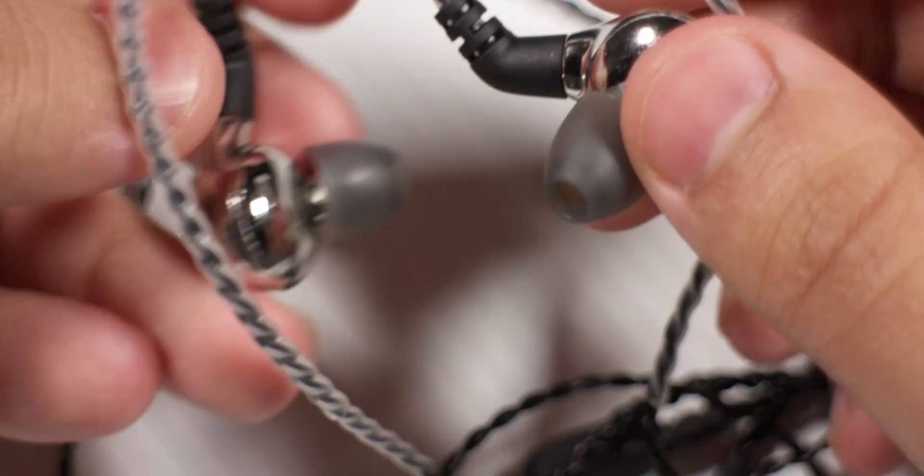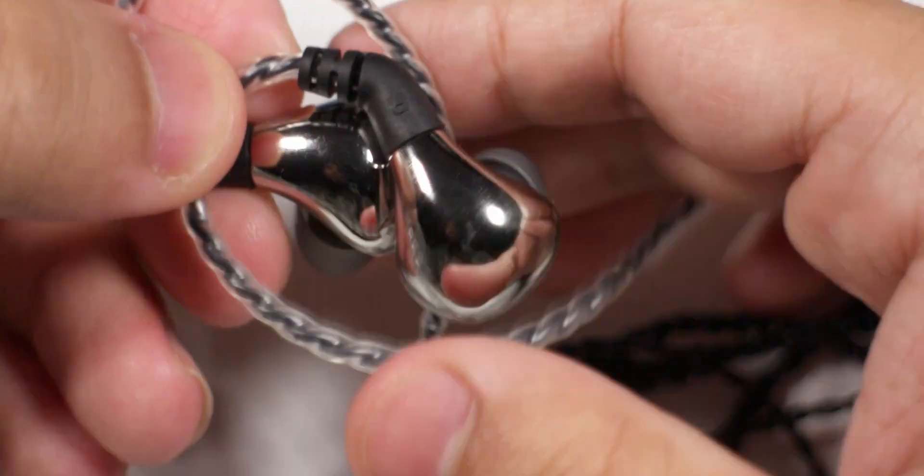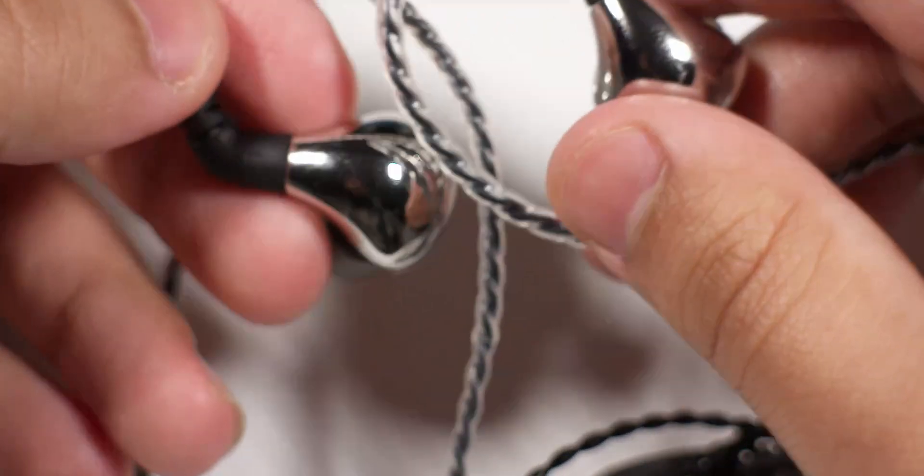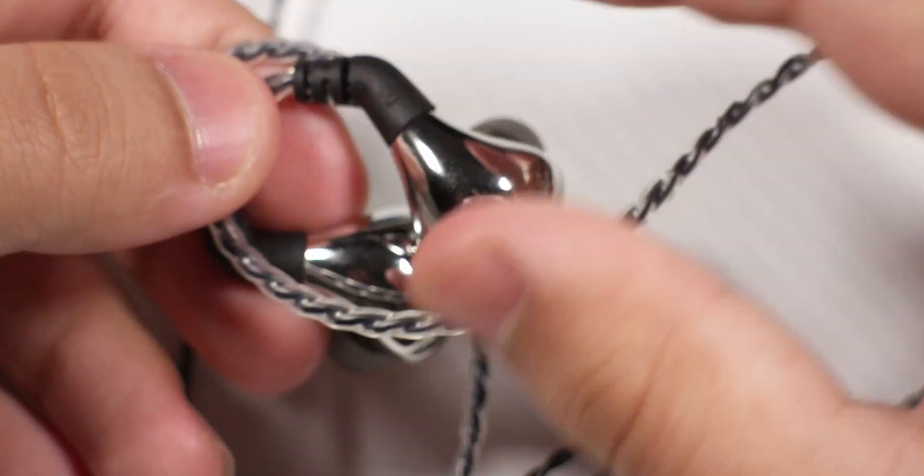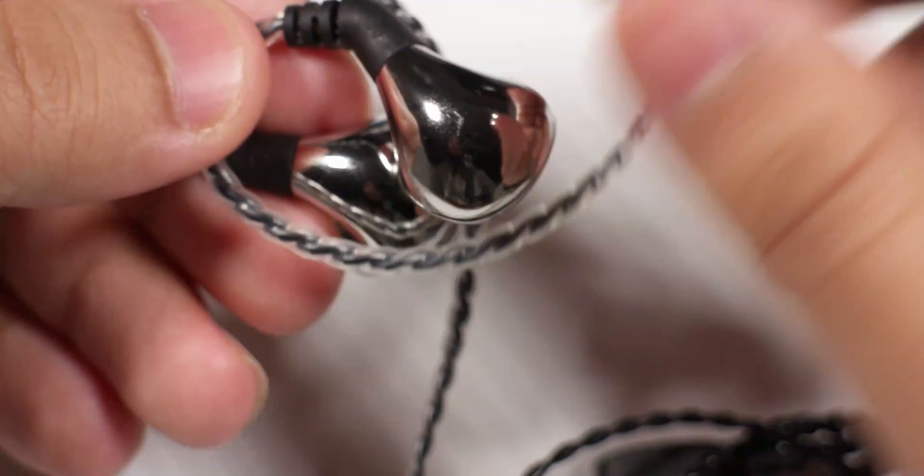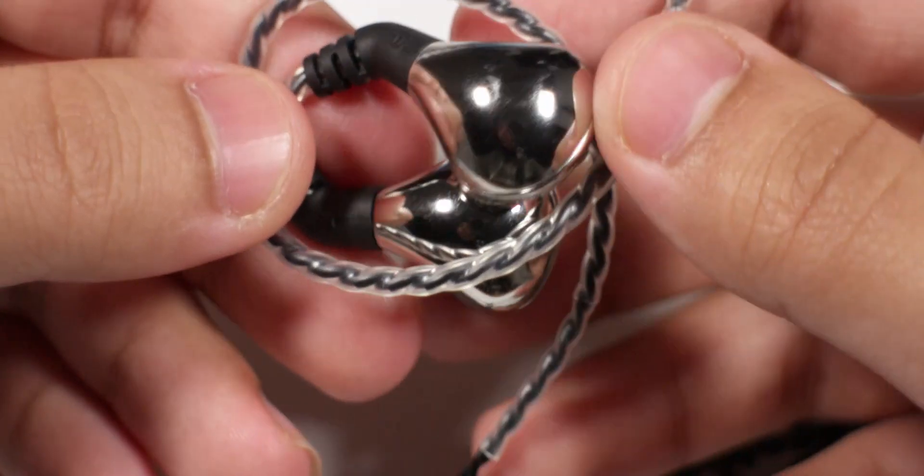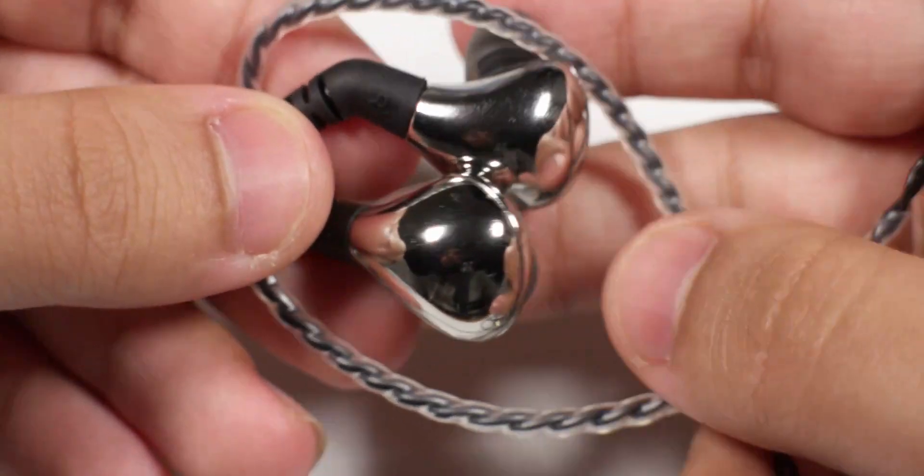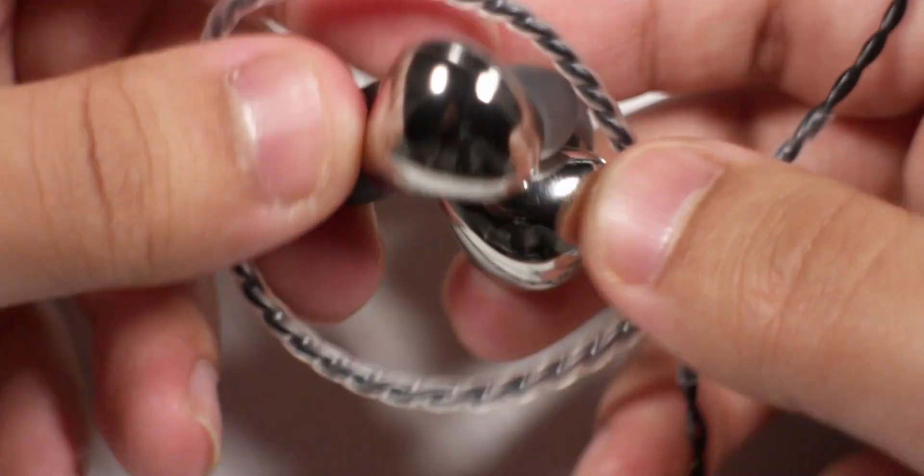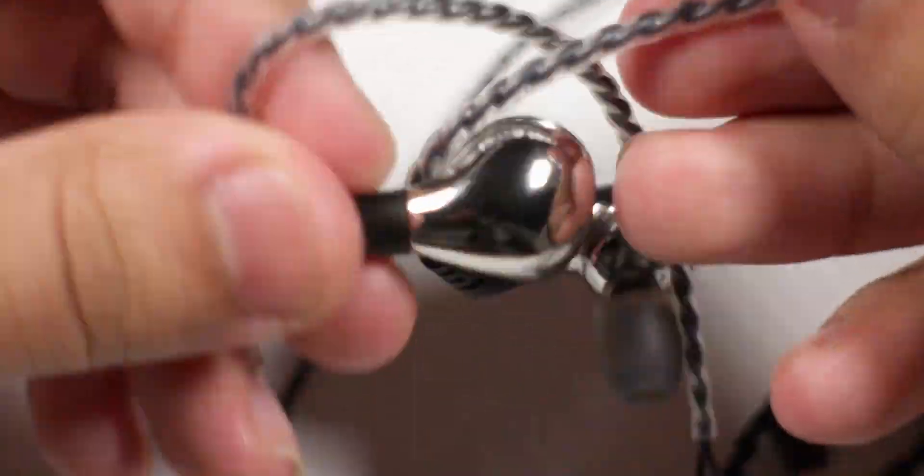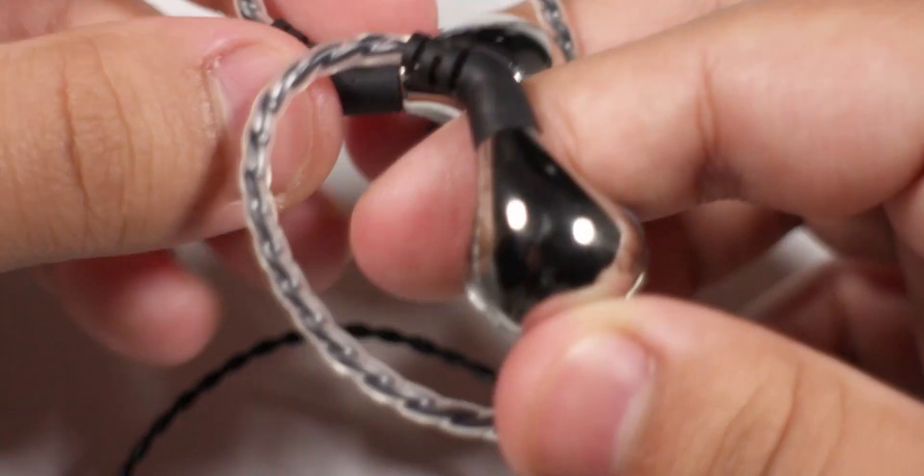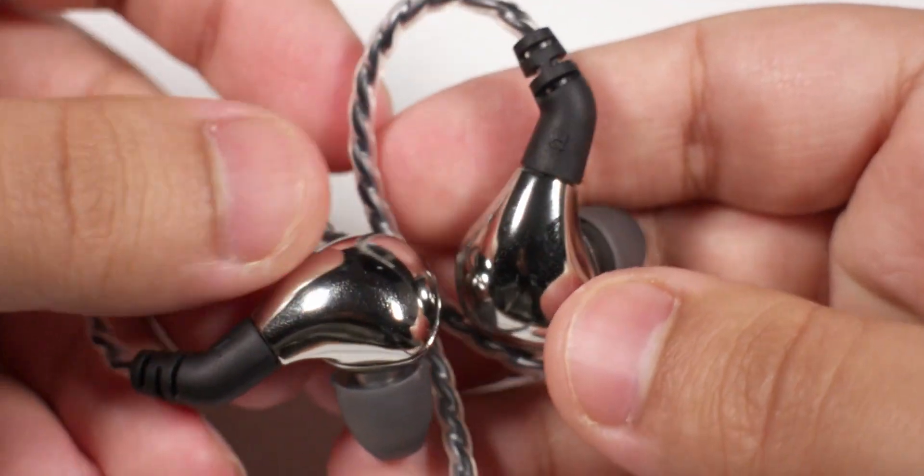I actually like the sound more than the Fiio FH5s because these sound really natural. They have a really balanced sound, so mids and bass are pretty neutral or natural sounding. There is, however, just a tiny, ever so slight boost in the bass. These are single dynamic drivers. The hiss is lower than the Fiio FH5s as well on the Hugo 2 and the Mojo. It didn't really bother me. Sound quality-wise, I can't say anything bad. For 20 pounds, you're getting quite a lot of good sound quality.